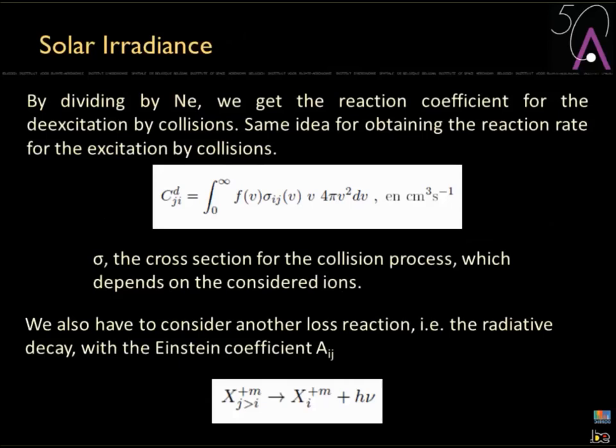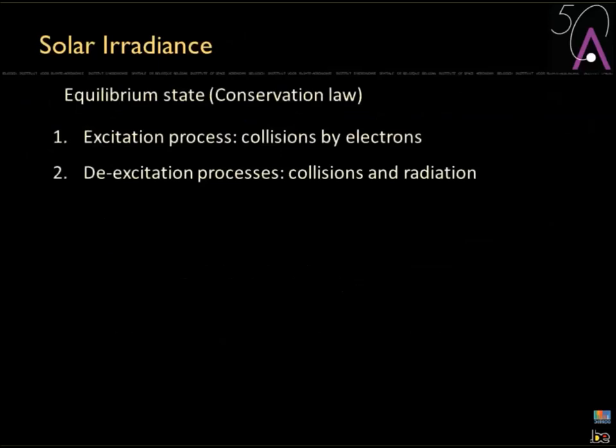We also have to consider another loss reaction: de-excitation of the ion by radiative decay — emission. Using the Einstein coefficient for this particular state of the ion, we have a loss of energy by emitting radiation.